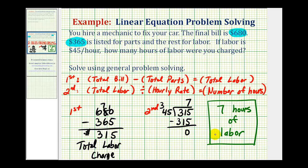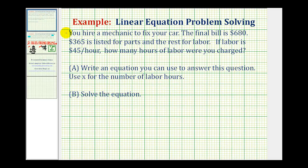Now that we solved this using our reasoning skills, let's go back and see if we can write an equation. Using the same type of reasoning, we know our total bill is equal to six hundred eighty dollars. So we know six hundred eighty must equal the cost for the parts, which is three hundred sixty-five, plus the total labor cost, which we know is forty-five dollars per hour. So if we let x equal the number of labor hours, this would be plus forty-five x.